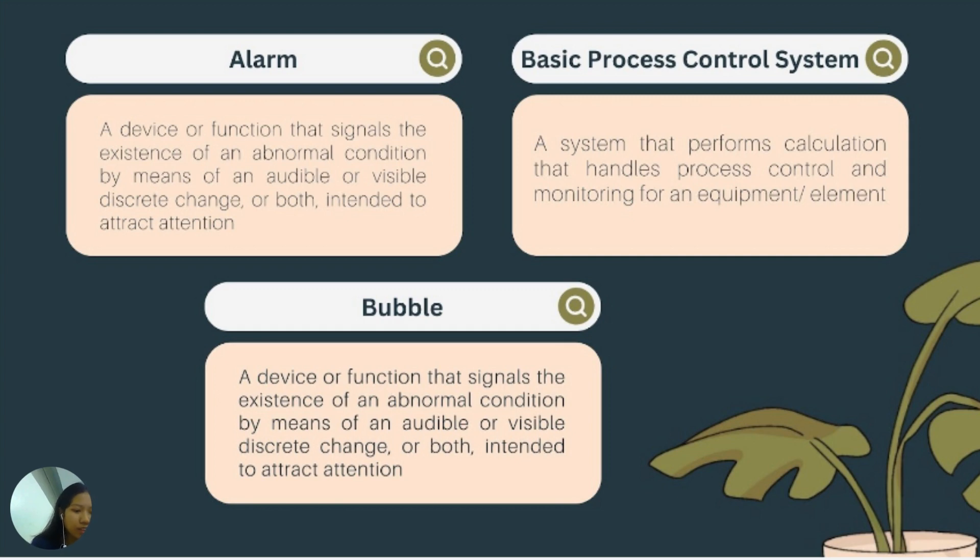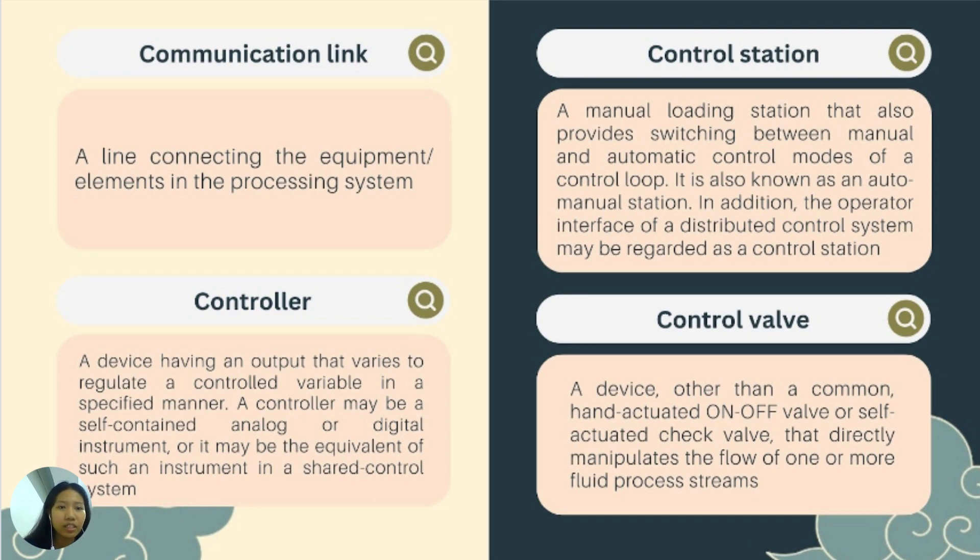For the terminologies in instrumentation and process control. First is the alarm, a device or function that signals the existence of an abnormal condition by means of an audible or visible discrete change or both intended to attract attention. Basic process control system. A system that performs calculation that handles process control and monitoring for an equipment or an element. Bubble. It is the circular symbol used to denote and identify the purpose of an instrument or function or it may contain a tag number. Communication link. It is a line connecting the equipment or elements in the processing system. Controller. A device having an output that varies to regulate a controlled variable in a specified manner. A controller may be a self-contained analog or digital instrument or it may be the equivalent of such an instrument in a shared control system.